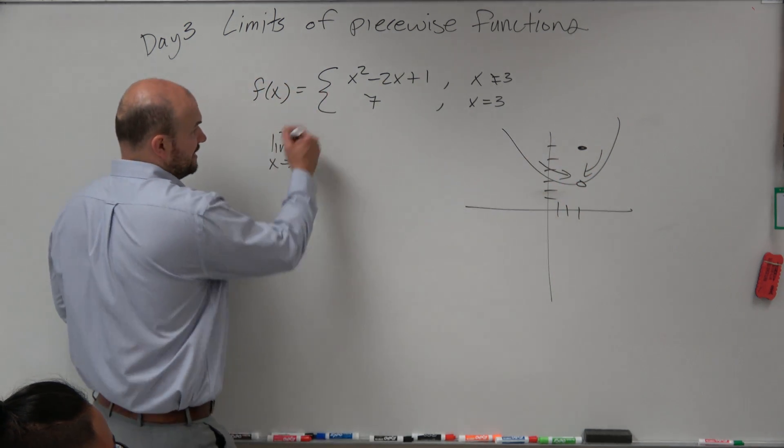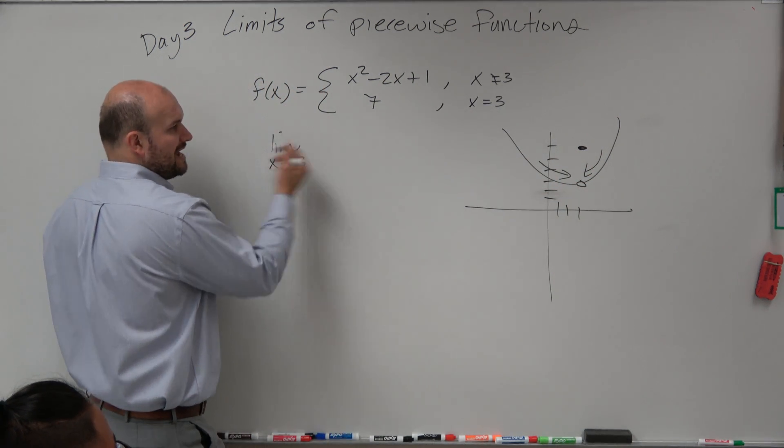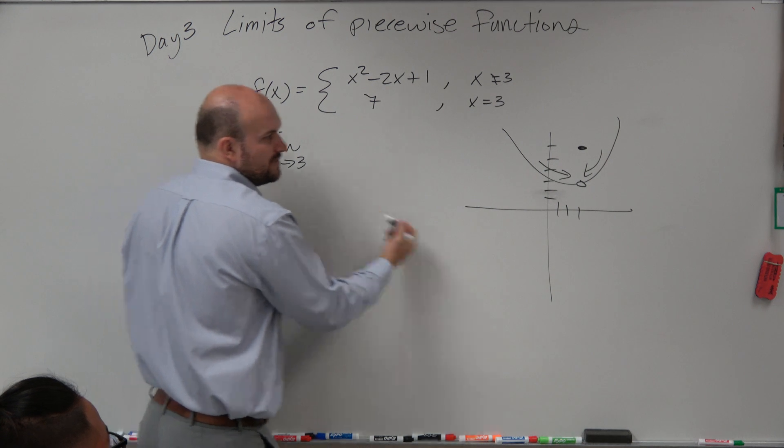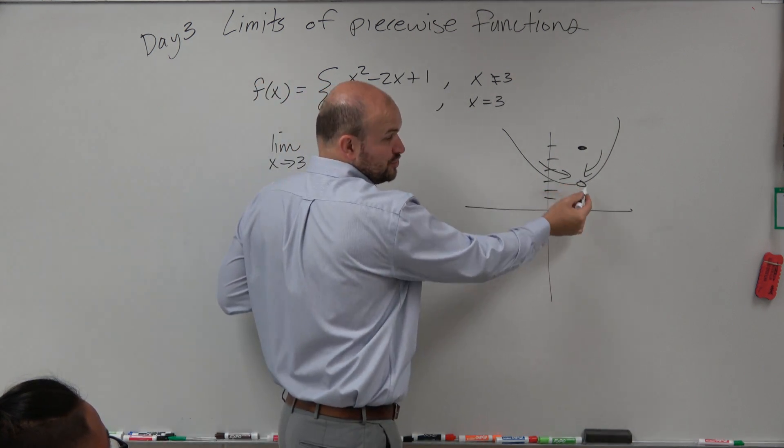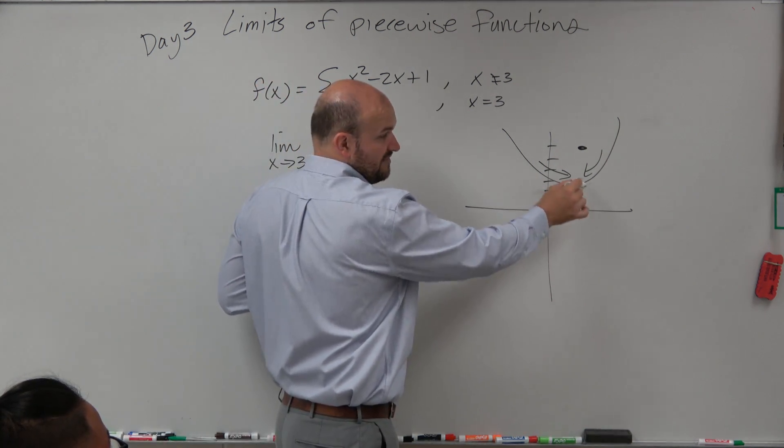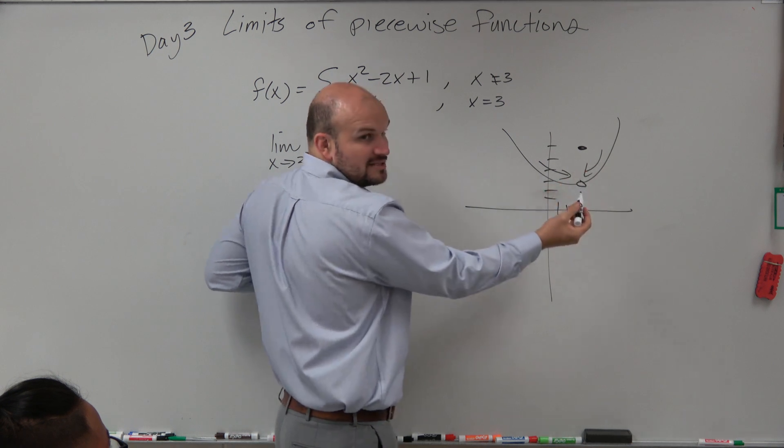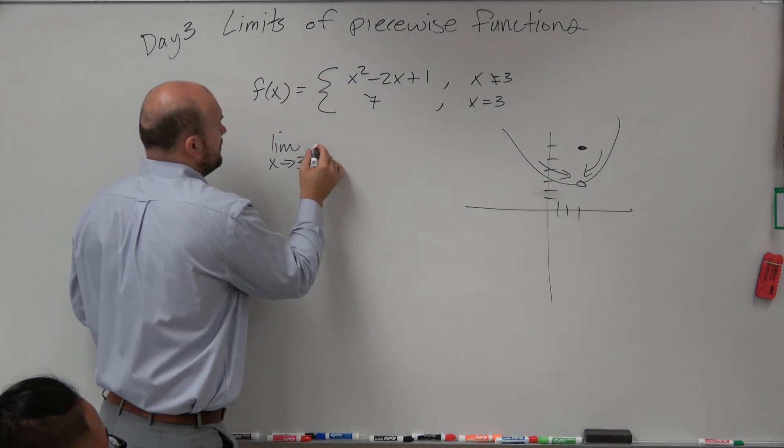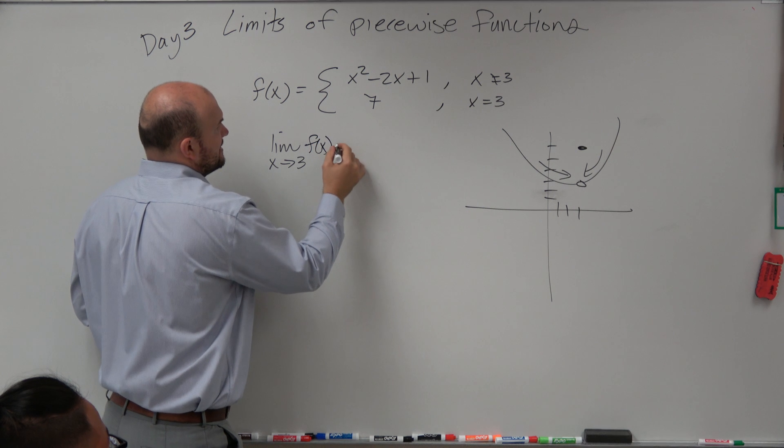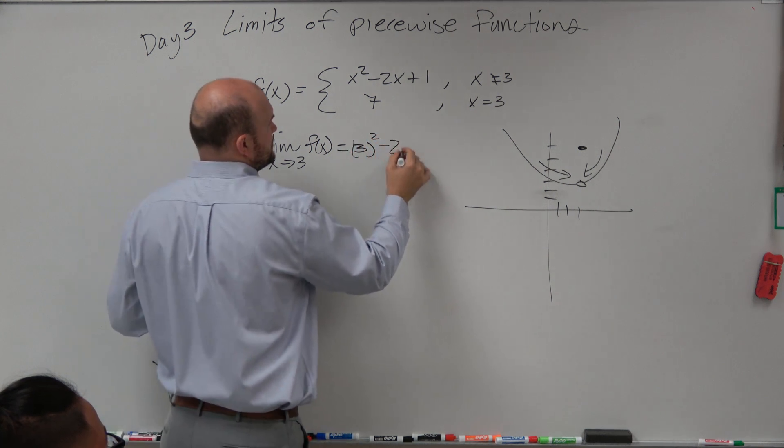So in this one, in a problem like this, we don't have to deal with the left and right hand limits because we know whatever this value should be, even though it's a hole, whatever that value should be, that's the limit, that's what it's approaching. So all we need to do is find the limit of f of x, just direct substitute into this equation.